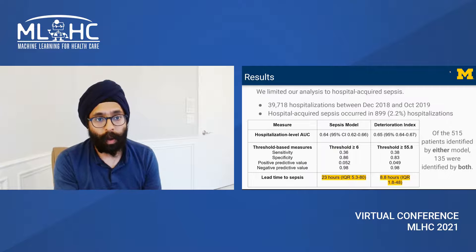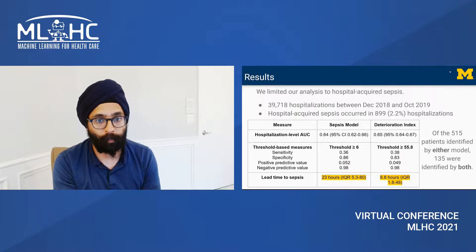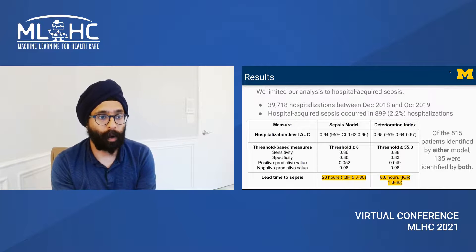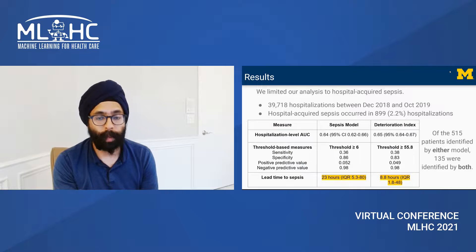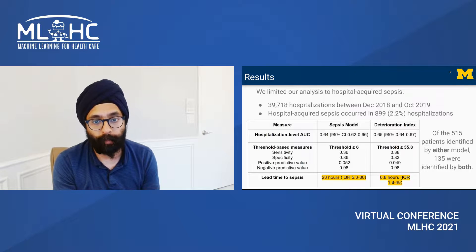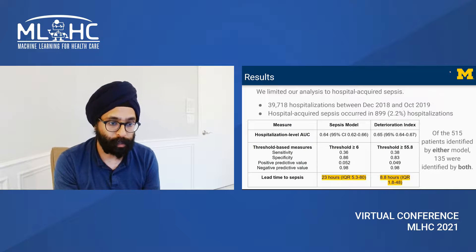We looked at hospital-acquired sepsis, which is sepsis that occurs after admission to the hospital. We looked at approximately 40,000 hospitalizations between 2018 and 2019, and we found that hospital-acquired sepsis occurred in about 2.2% of these hospitalizations.